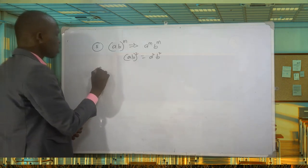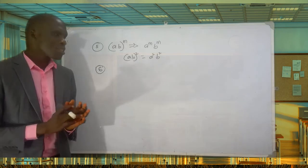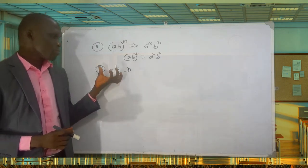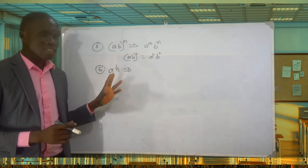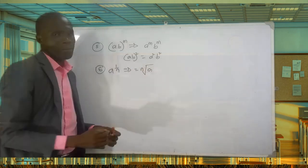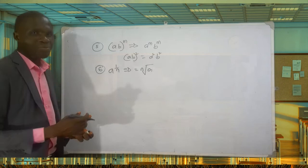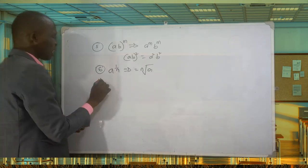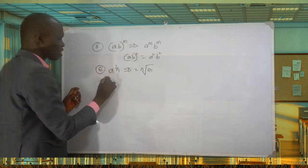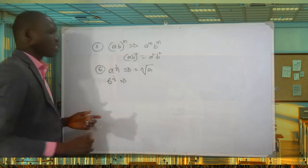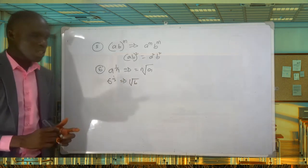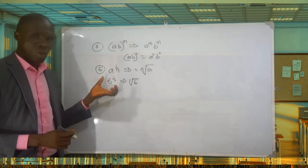The sixth law: if you have a raised to power 1 over n — that is, a fraction as the power — this gives you the nth root of a. For example, 6 raised to power one half gives you the square root of 6, because the denominator 2 becomes the root.